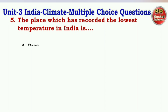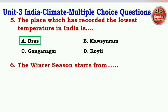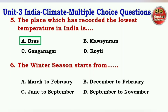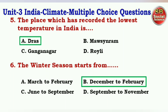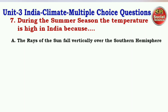Next question: The place which has recorded the lowest temperature in India is — options are Drass, Mawsynram, Ganganagar, Ruili. The right answer is option A — Drass. Next question: The winter season starts from — options are March to February, December to February, June to September, September to November. The right answer is option B — December to February.